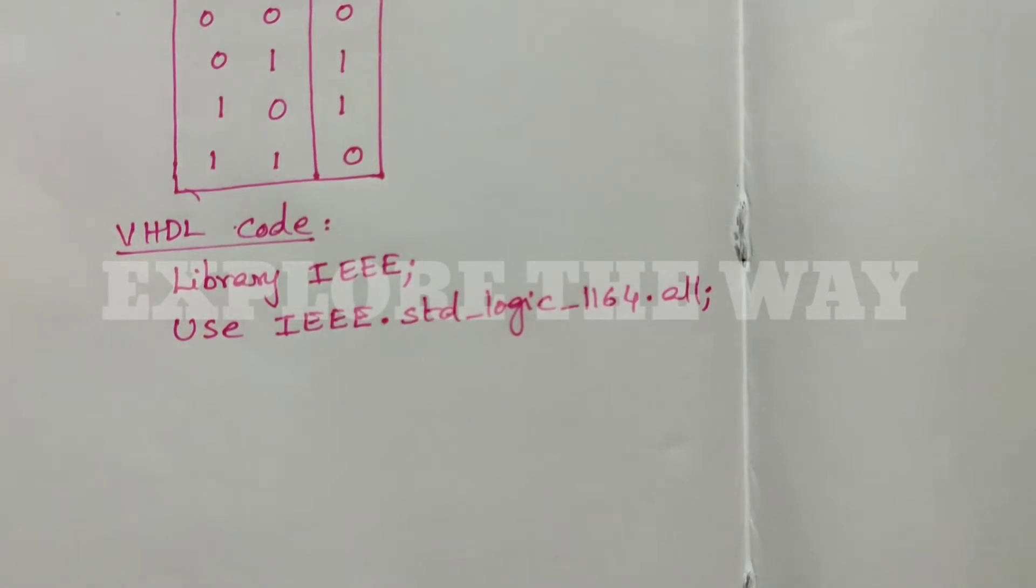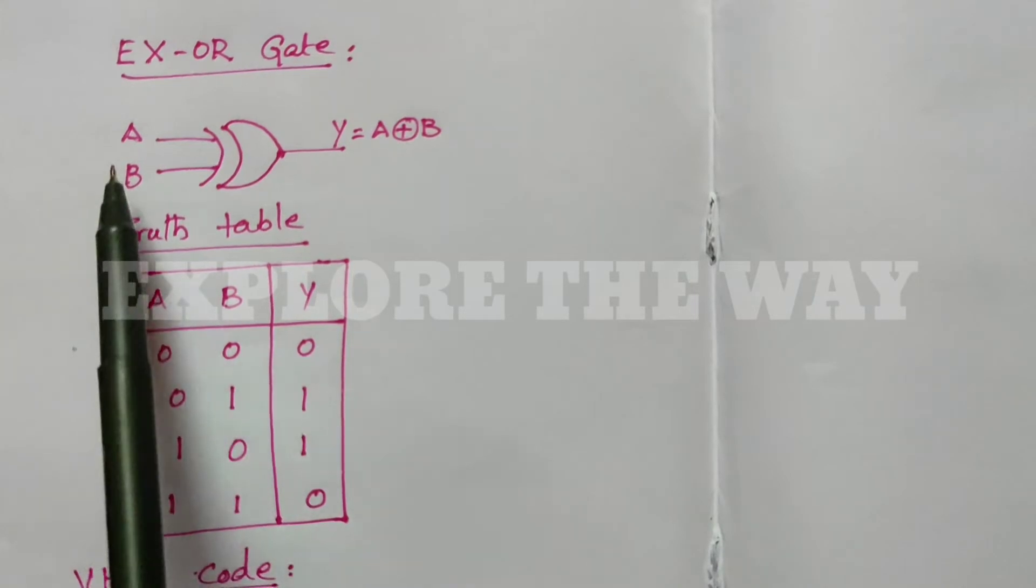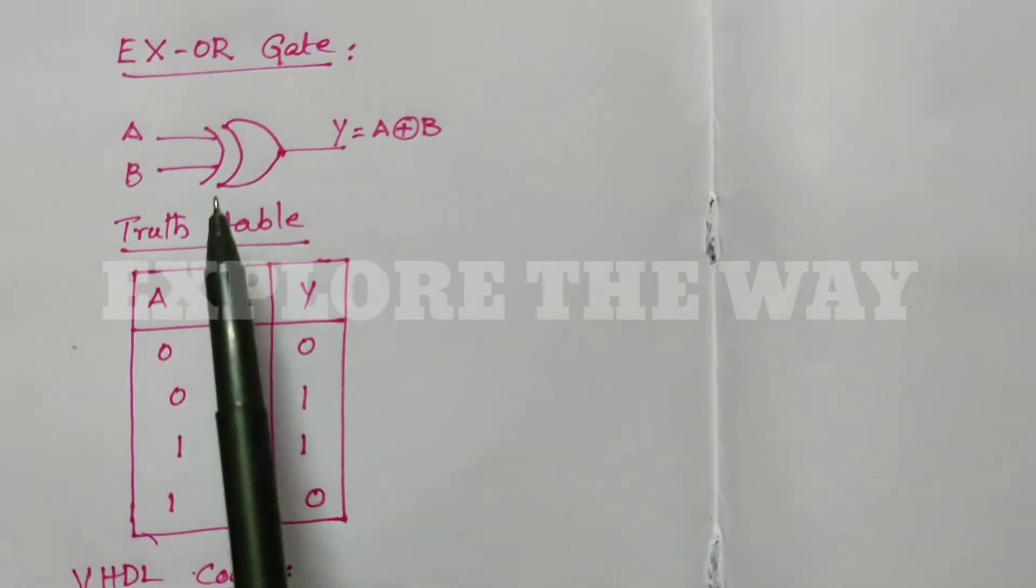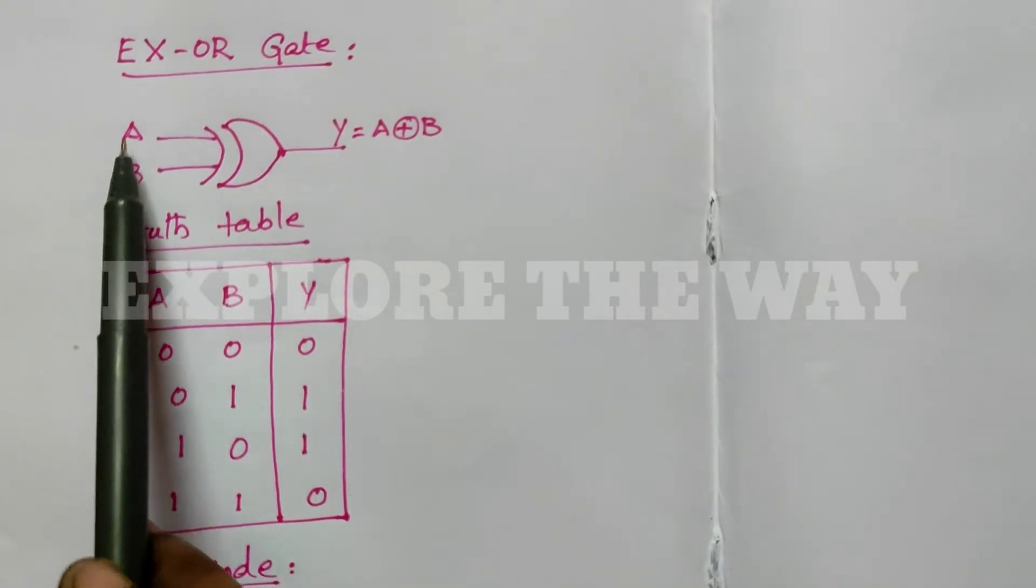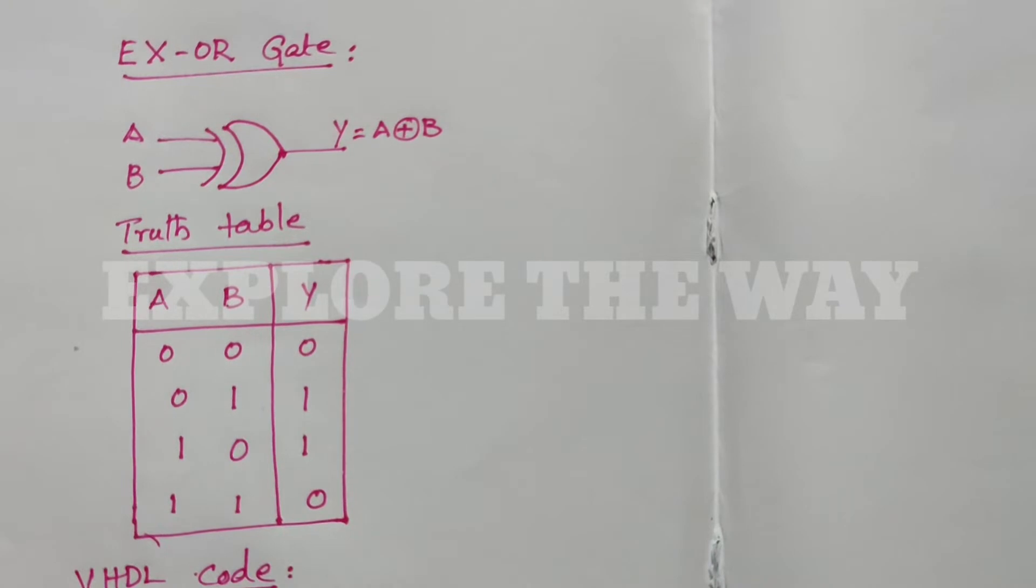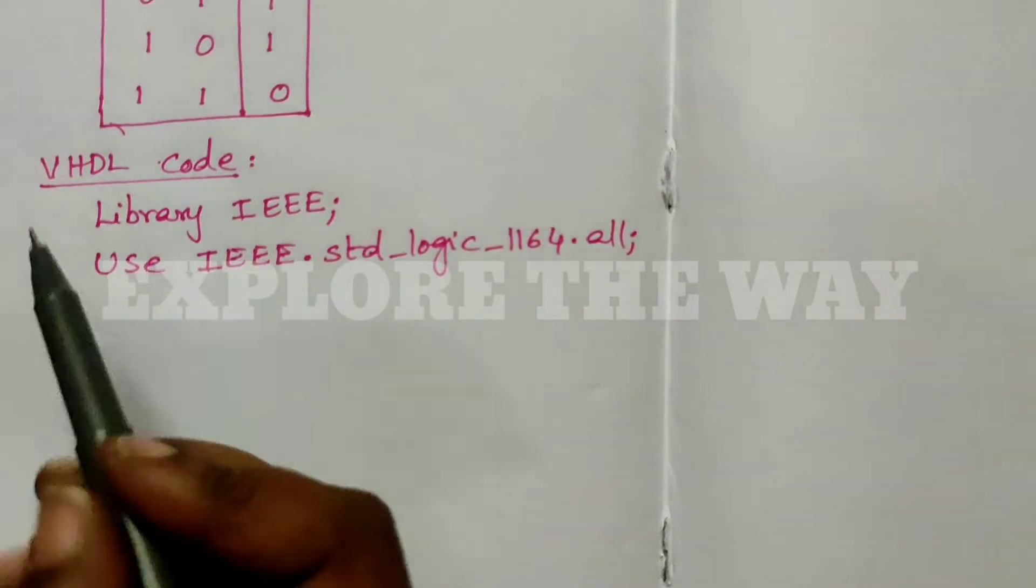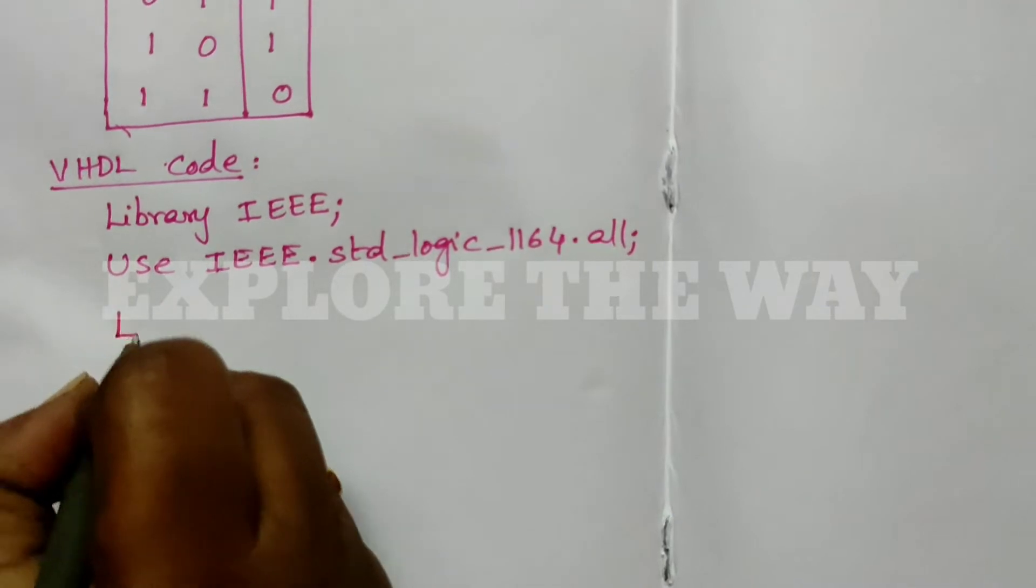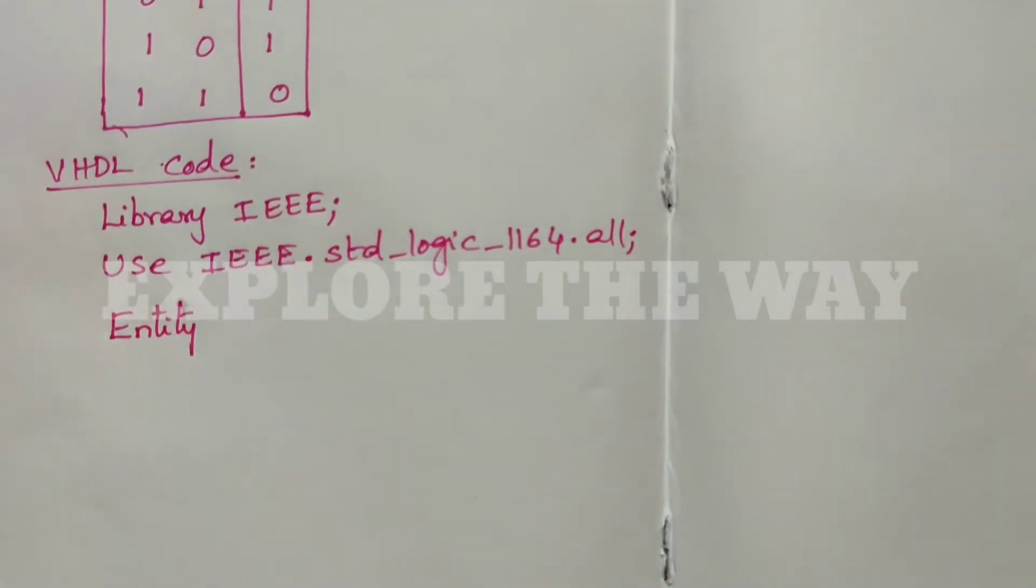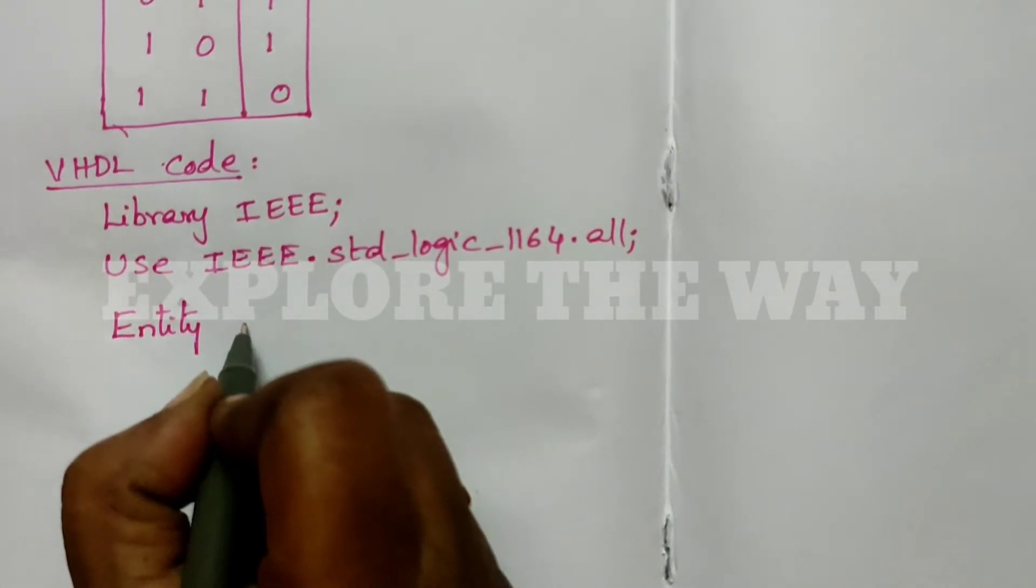The second part is the Entity. The Entity shows only the primary inputs and primary outputs of any logic circuit. This logic circuit consists of two inputs and one output, which are declared in the entity. Now we write Entity, and the entity name. I am writing the entity name as xorgate.